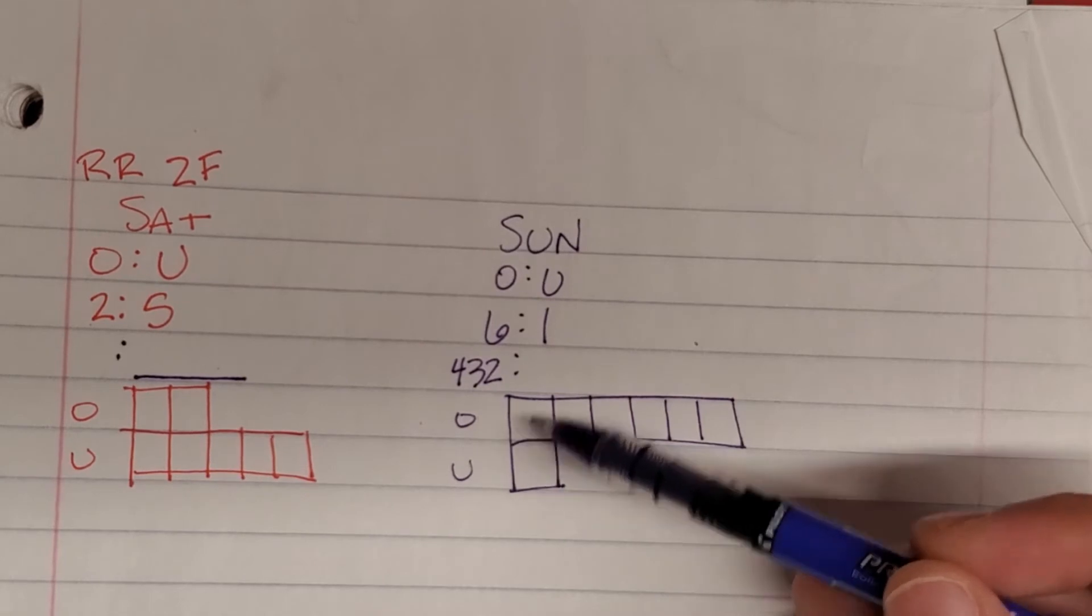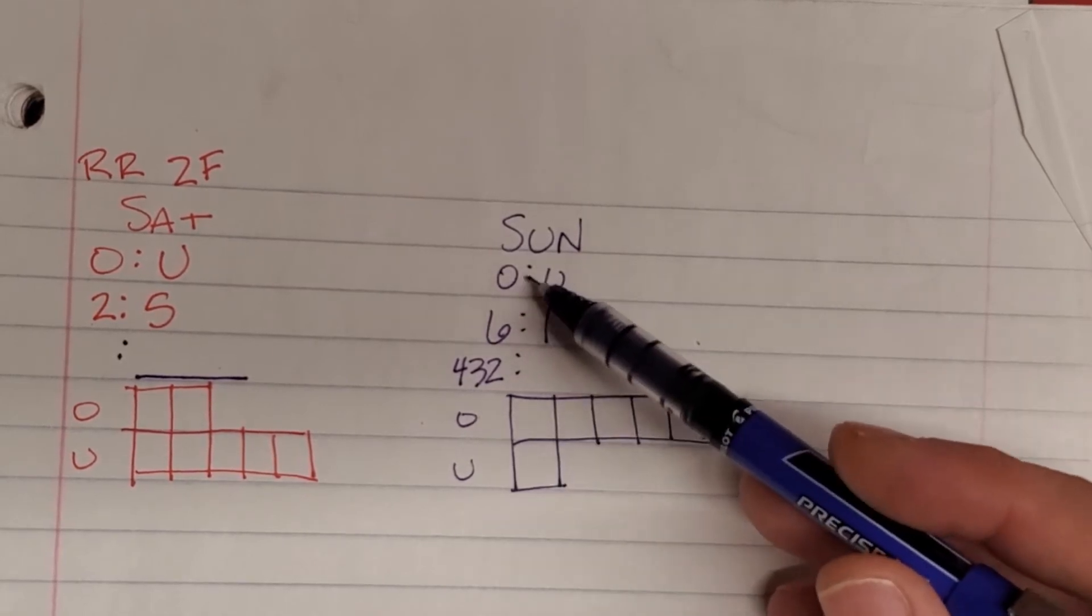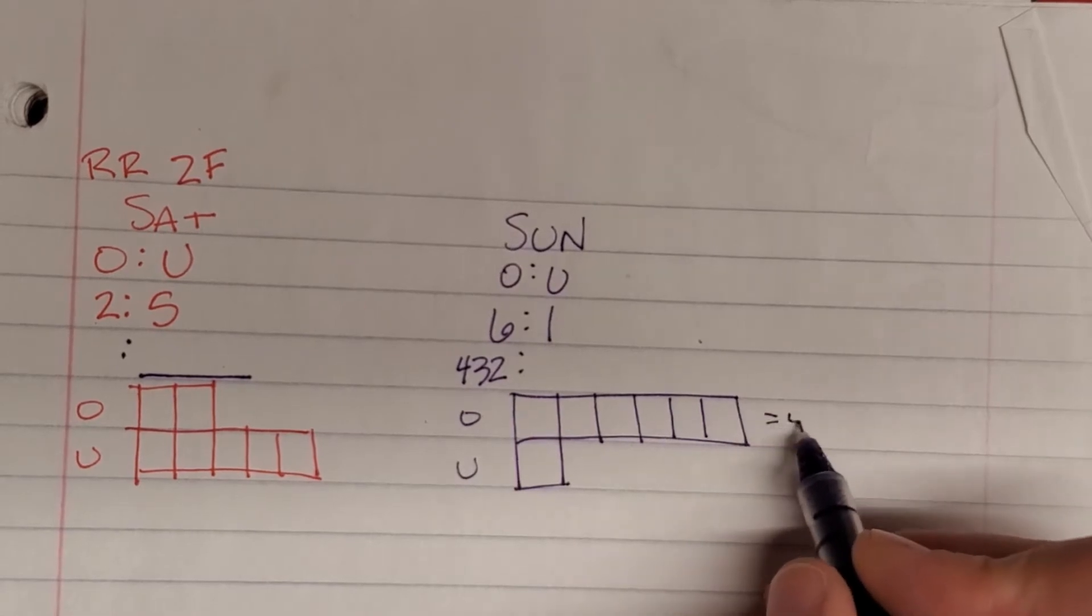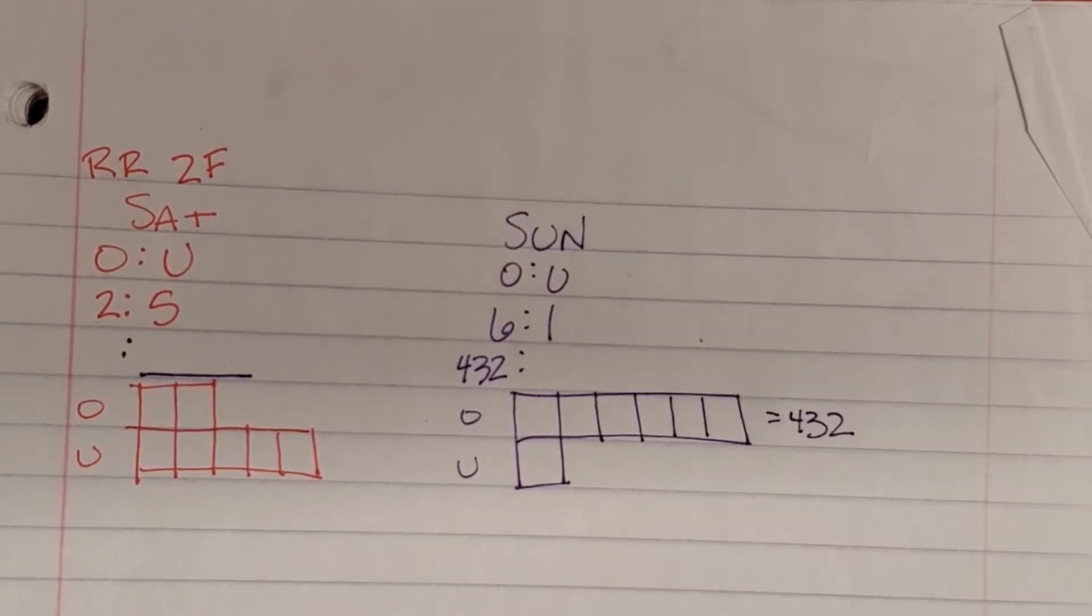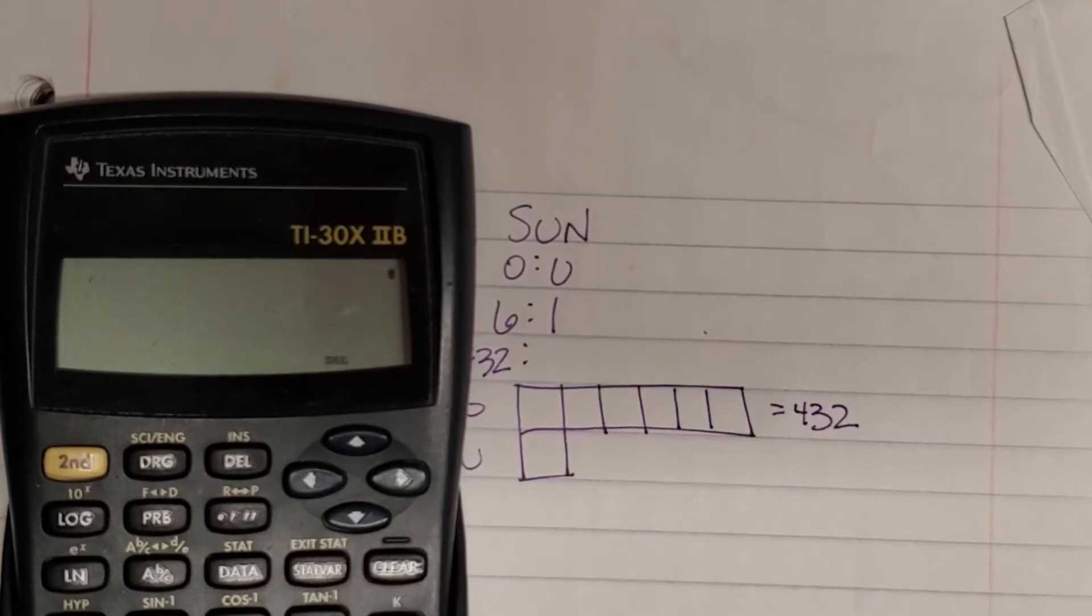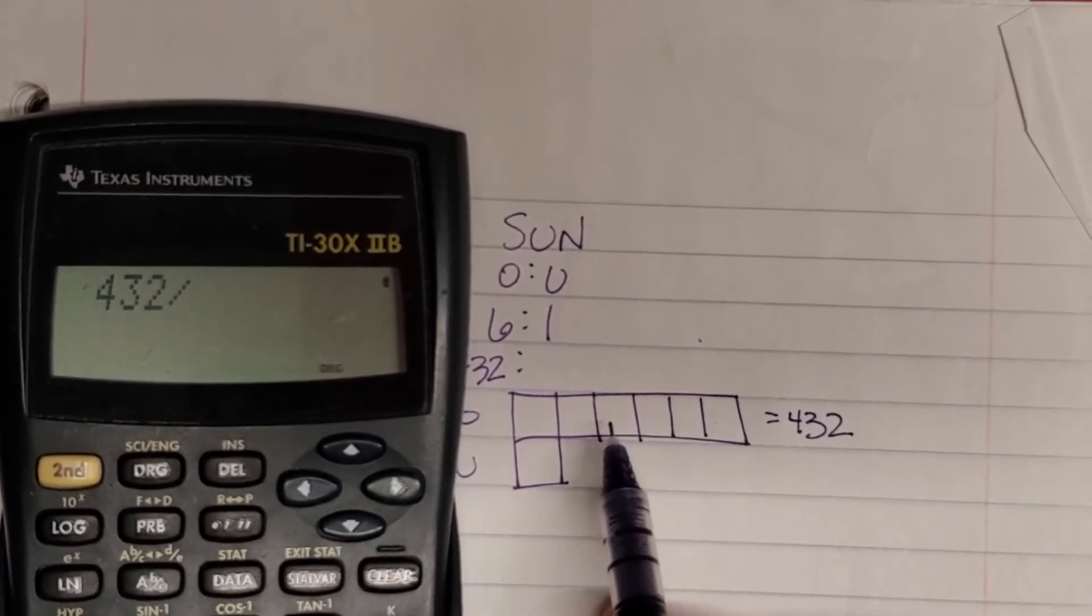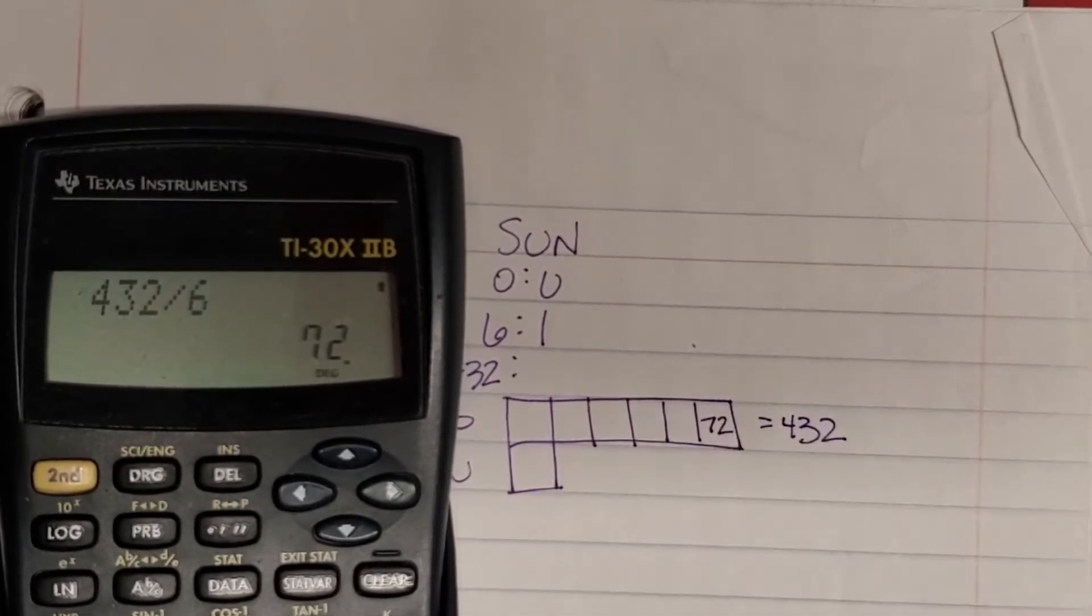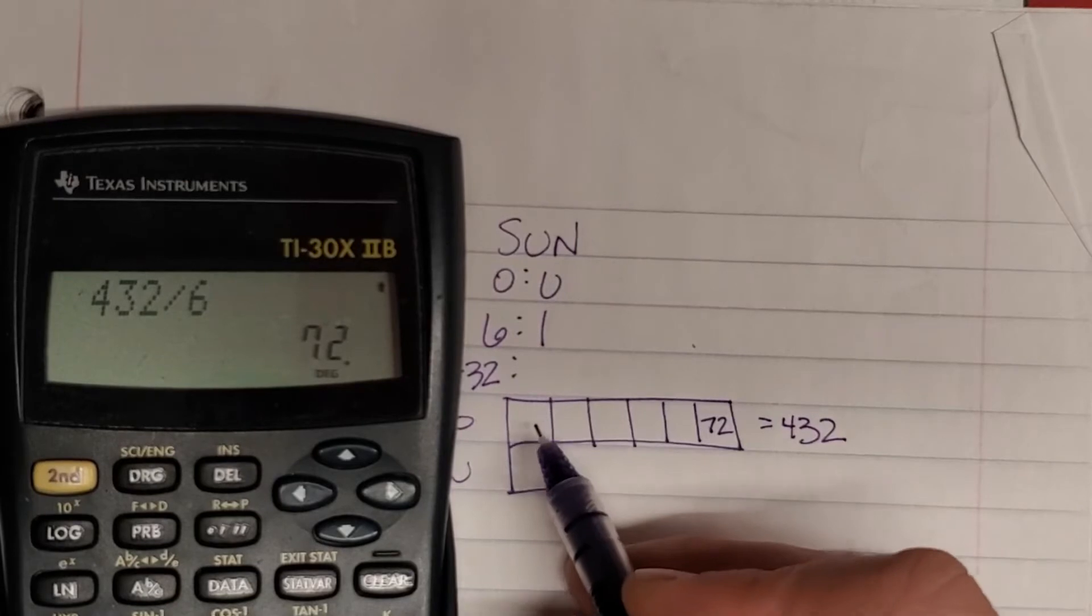Well, let's figure out how many unoccupied rooms exist on Sunday night. So if this whole row is worth 432, remember to figure out the value of each box is going to be 432 divided by one, two, three, four, five, six is 72. So 72 goes in each box.